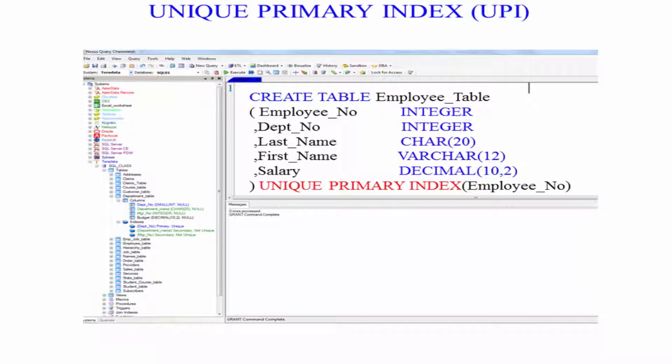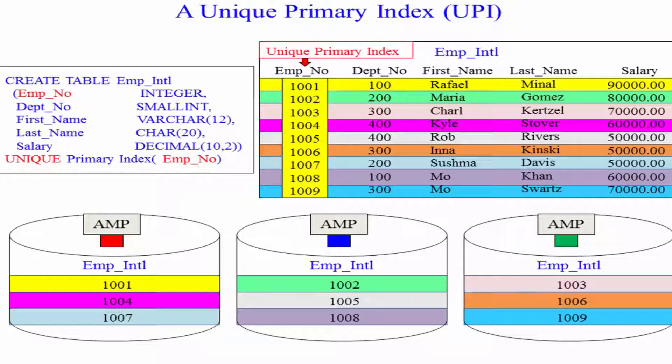And we've picked that on employee number. So they're going to hash that employee number, and that's how they'll distribute the data. And as you can see, and this is important, every time you use a unique primary index, the data will spread perfectly evenly across those amps. OOPI, perfect distribution.